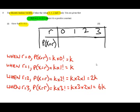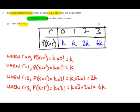Let's put those into the table, the discrete random variable, and we'll get K for 0, K for 1, 2K when R equals 2, and 6K when R equals 3.